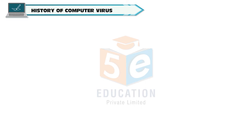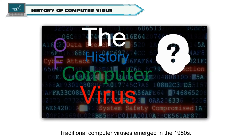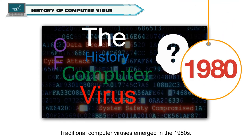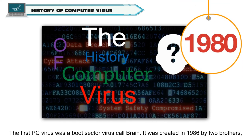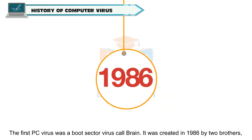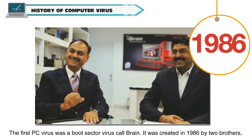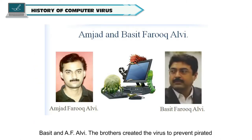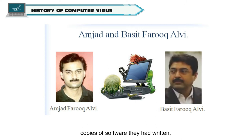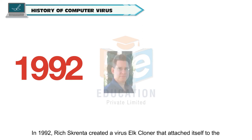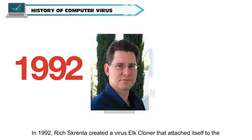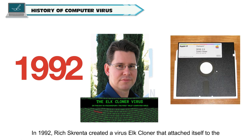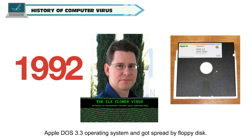History of Computer Virus. Traditional computer viruses emerged in the 1980s. The first PC virus was a boot sector virus called Brain. It was created in 1986 by two brothers, Basit and A.F. Alvi. The brothers created the virus to prevent pirated copies of software they had written. In 1992, Rich Screnta created a virus called Elk Cloner, that attached itself to the Apple DOS 3.3 operating system and got spread by floppy disk.